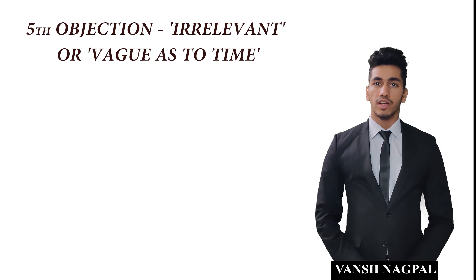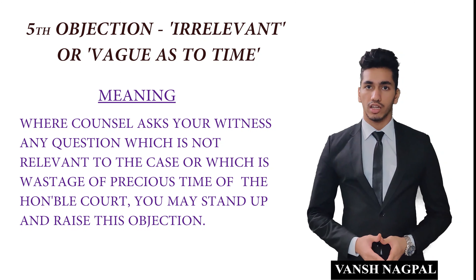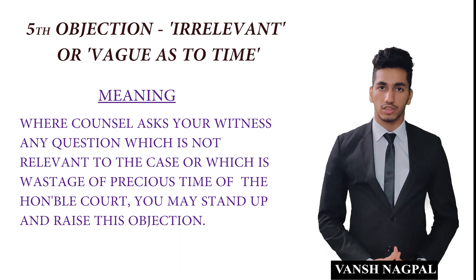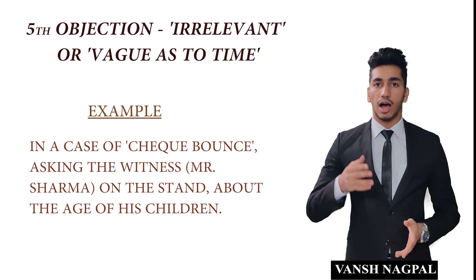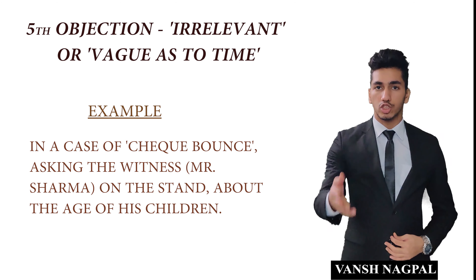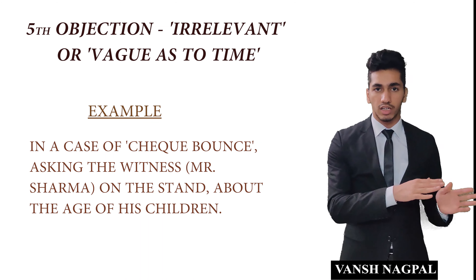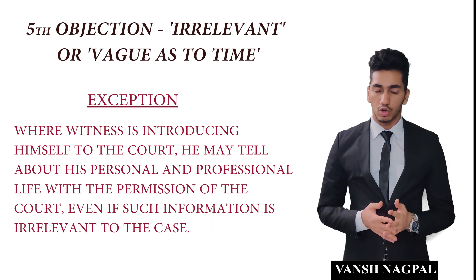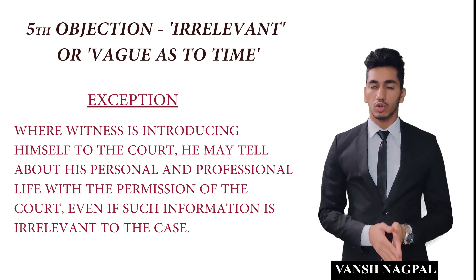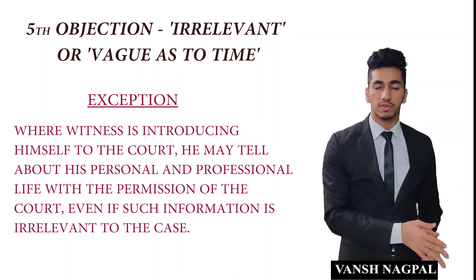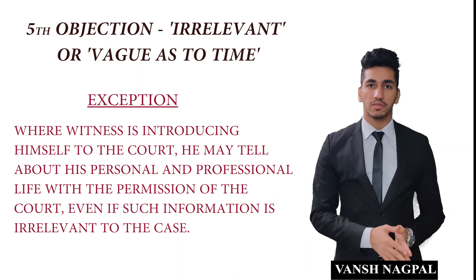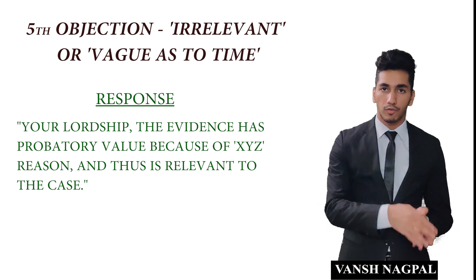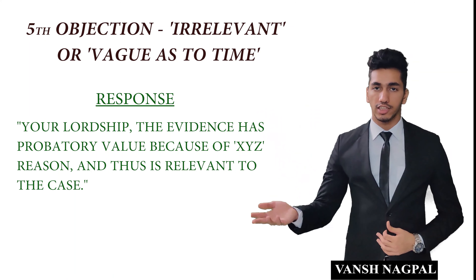The fifth objection is irrelevant, or vague as to time. If someone asks your witness a question that is not relevant to the case or is a waste of time, you can use this objection. For example, if the case involves a cheque bounce matter and opposing counsel asks the witness their age — that is irrelevant. An exception is during direct examination introductions, where a witness providing family background or similar context may not be objectionable. If your objection is challenged, you must tell the court the probative value of the evidence.